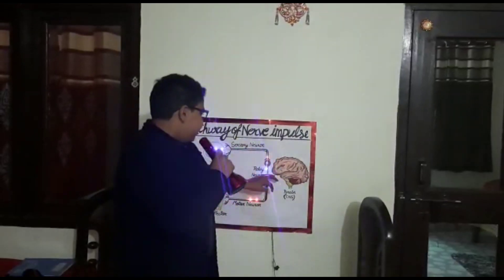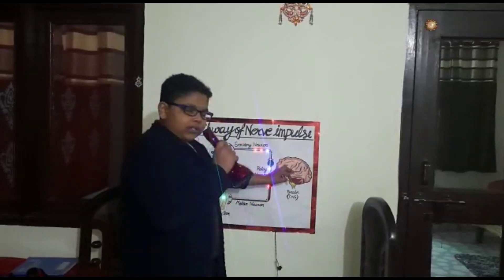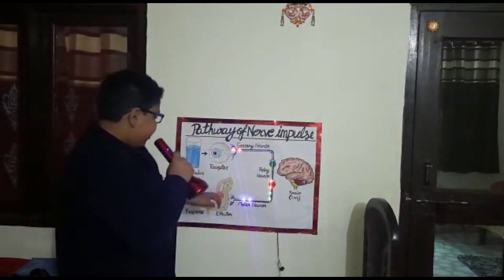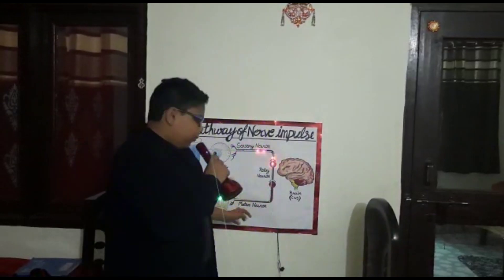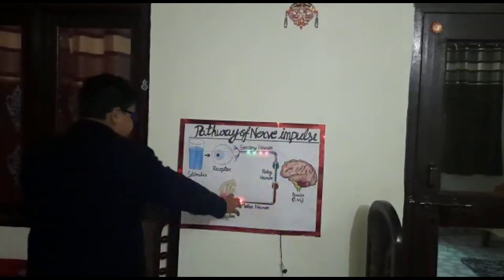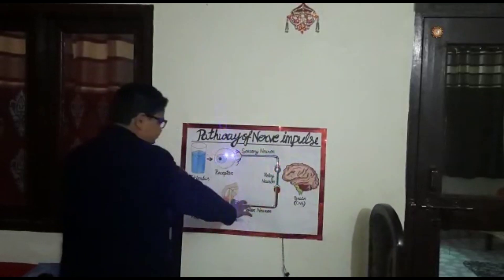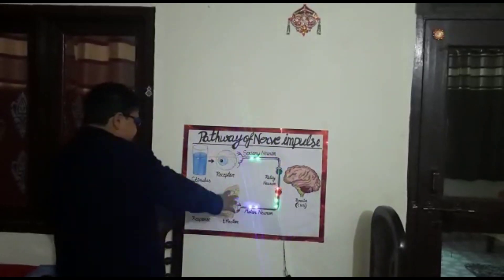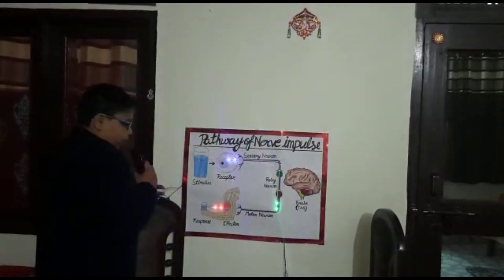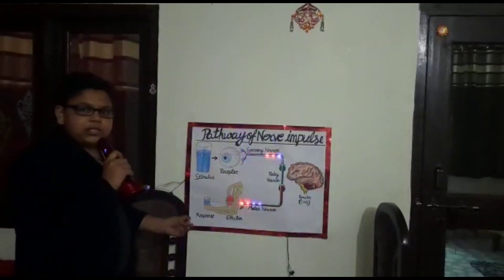Then the relay neuron takes the appropriate response out of the brain and transfers it to the motor neuron. The motor neuron then transfers it to the effector organ, which I have taken as an arm, for the appropriate response.